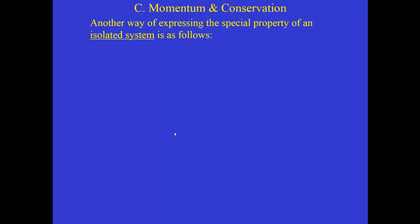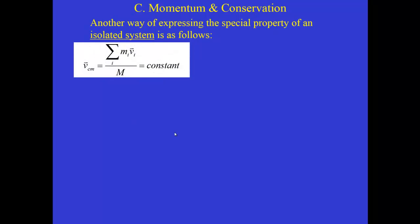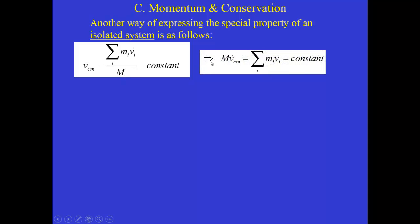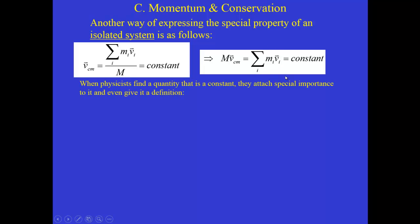For an isolated system, the velocity of the center of mass remains constant. The velocity of the center of mass is defined as the sum of mv for each particle divided by the total mass. Rearranging, total mass times center of mass velocity equals the summation of mv over all particles. If the center of mass velocity doesn't change, that summation is also constant. When physicists find a quantity that remains constant, they get excited and attach special importance to it — and in this case, we give it its own definition.